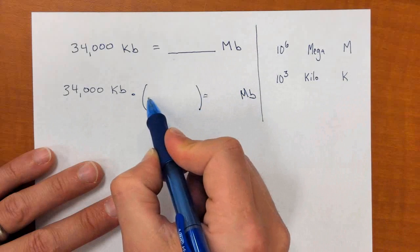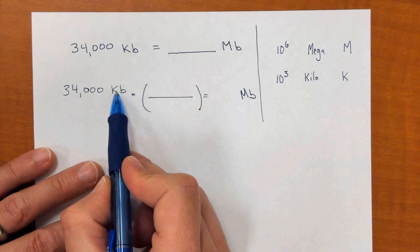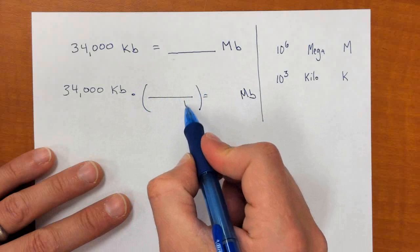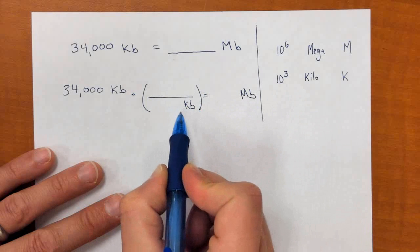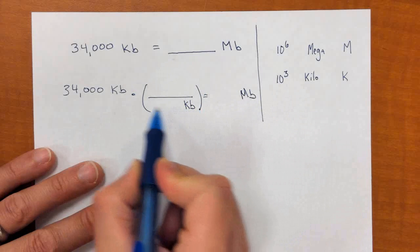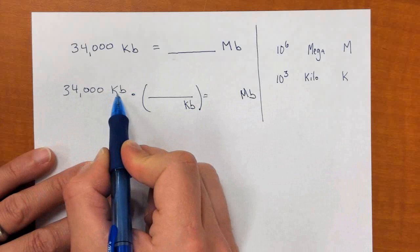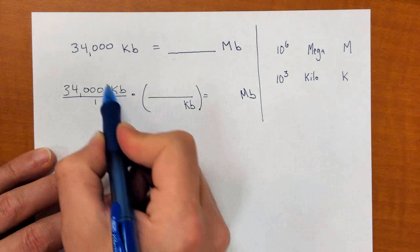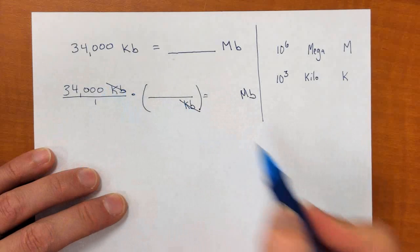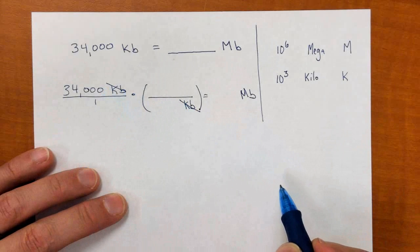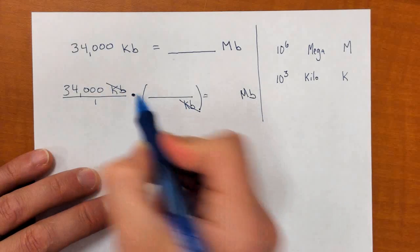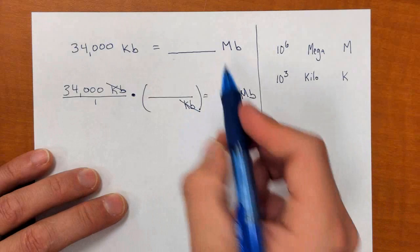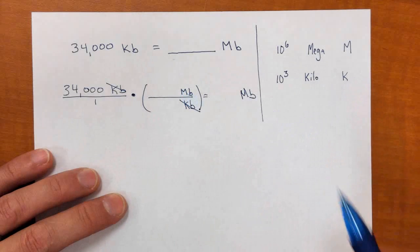This conversion factor needs to cancel kilobytes out. So kilobytes are going to go in this fraction, and they need to go in the bottom, the denominator, because it's diagonal from where kilobytes are at currently. This is really the numerator. When they're diagonal, you can cancel the units out, like cross-reducing a factor when we multiply fractions. So if kilobytes go in the bottom, then the new desired unit megabytes must go on top.